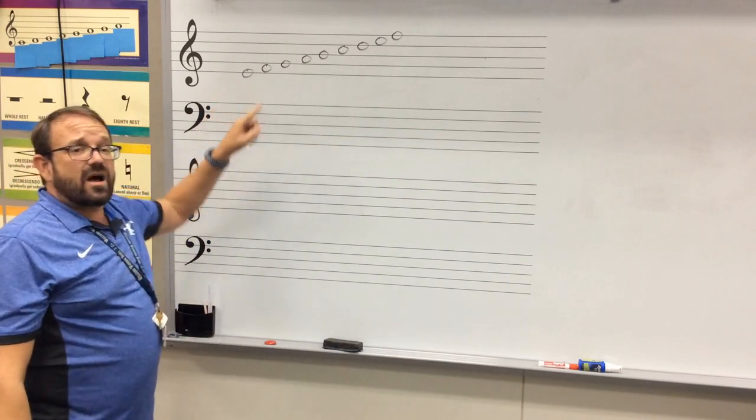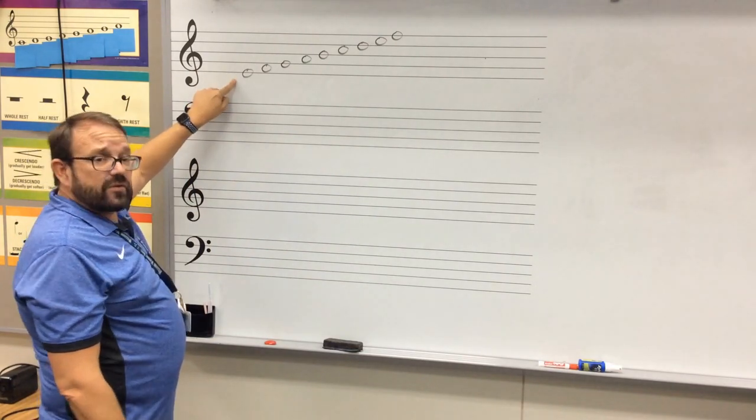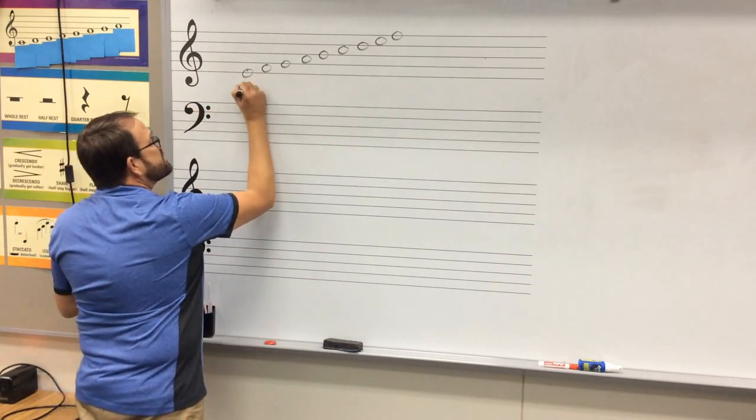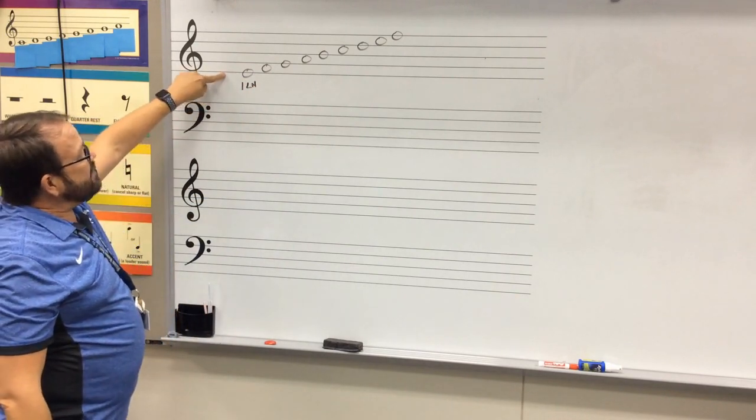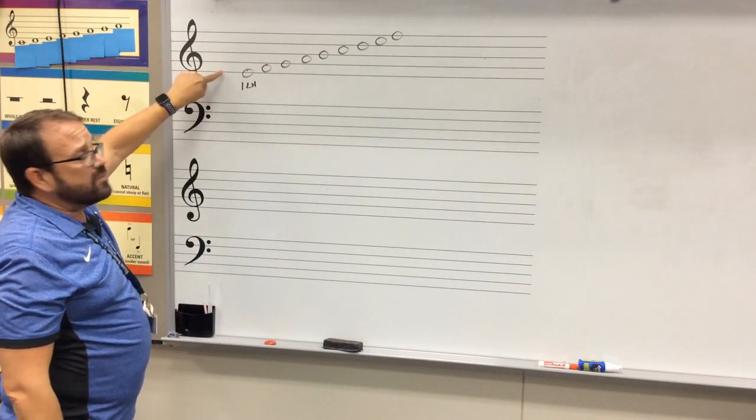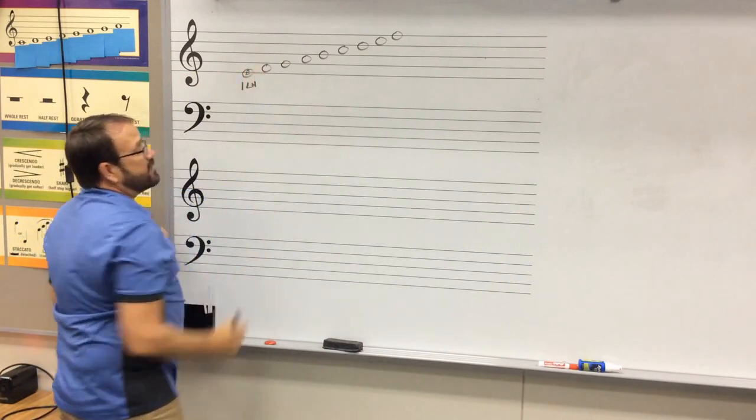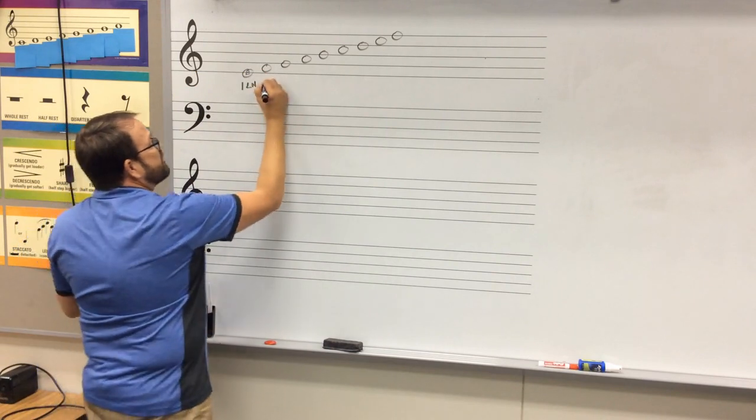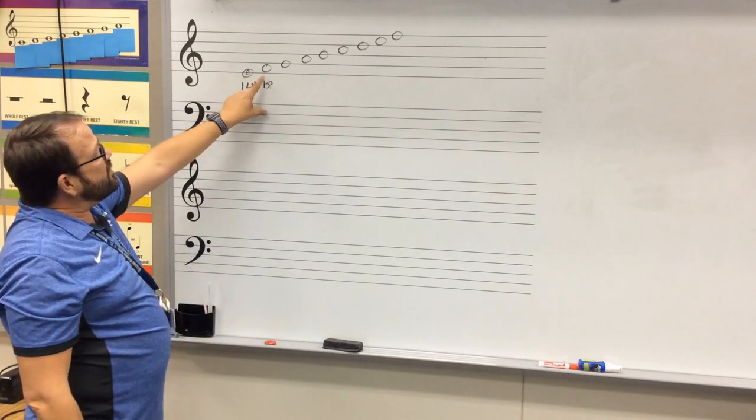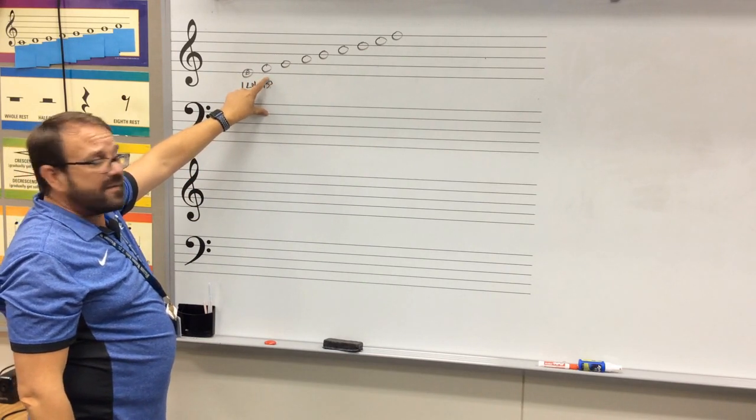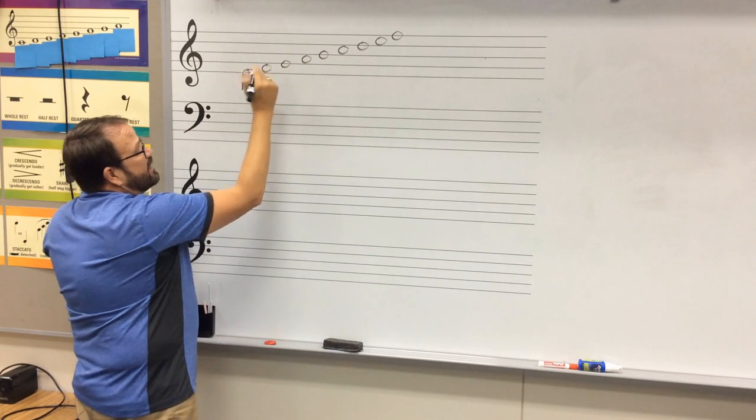Now, each one of these is on a line or a space. This would be on the first line, so we're going to put first line, and you need to know that the treble clef, the bottom line is an E. Okay, the next note is in a space, so we're going to put first space, and we would put the next letter in the musical alphabet on that note right there. So if this is E, this must be F.